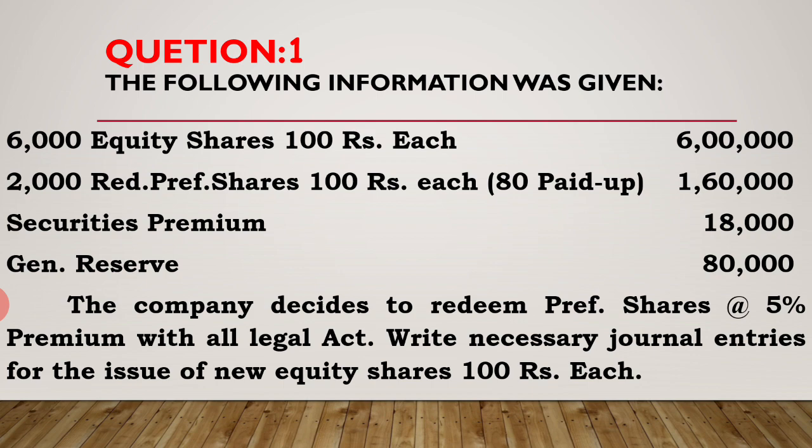Security premium 18,000 — in your question, security premium is the same as share premium, which we can use for writing off the premium. Then general reserve 80,000. The company decides to redeem preference shares at the rate of 5% premium with all legal requirements — meaning you have to convert partly paid up preference shares to fully paid up first, then redeem.